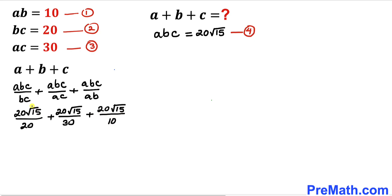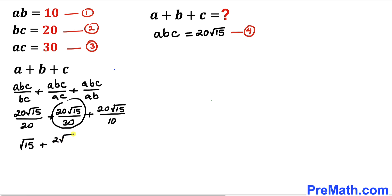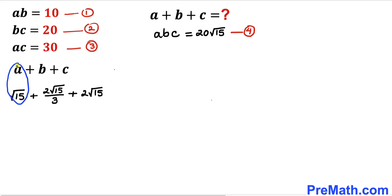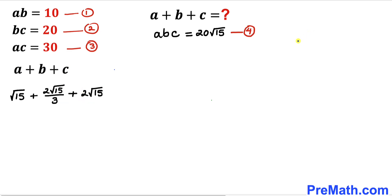Reducing each term: the first term gives root 15, the second gives 2 root 15 over 3, and the third gives 2 root 15. So our individual values are a equals root 15, b equals 2 root 15 over 3, and c equals 2 root 15.